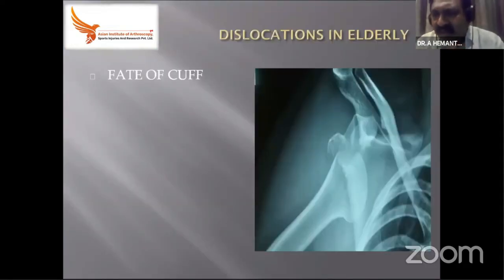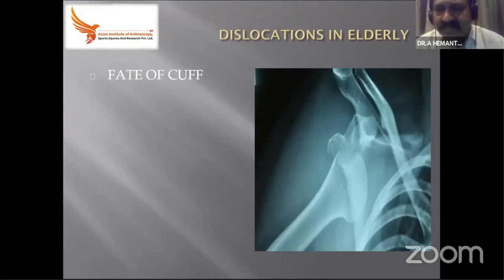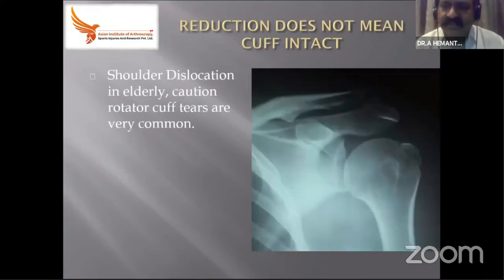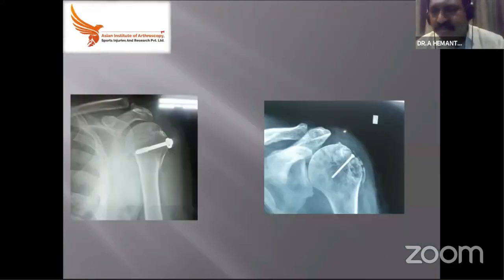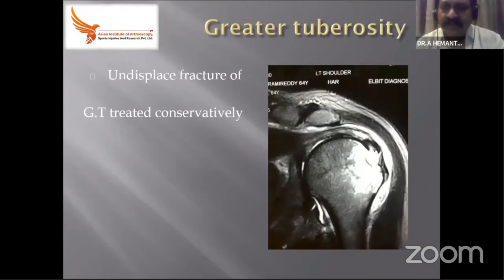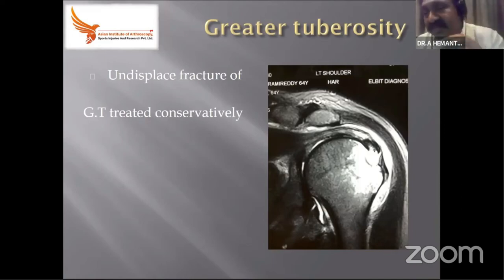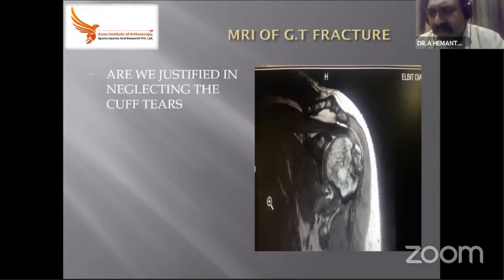In elderly patients with dislocation, a cuff tear is quite possible alongside a greater tuberosity fracture-dislocation. After reduction and X-ray assessment, we may feel satisfied or fix it with a screw. What we miss by not taking an MRI scan: we miss the cuff attachment. Most of the time the tuberosity unites, but sometimes it goes into osteolysis even after fixation. We should not miss a cuff tear along with a dislocation in the elderly population.